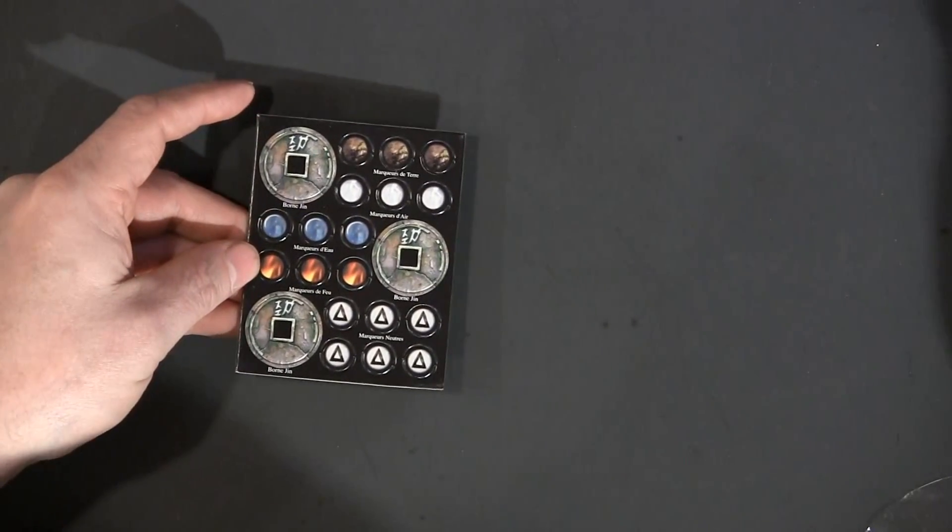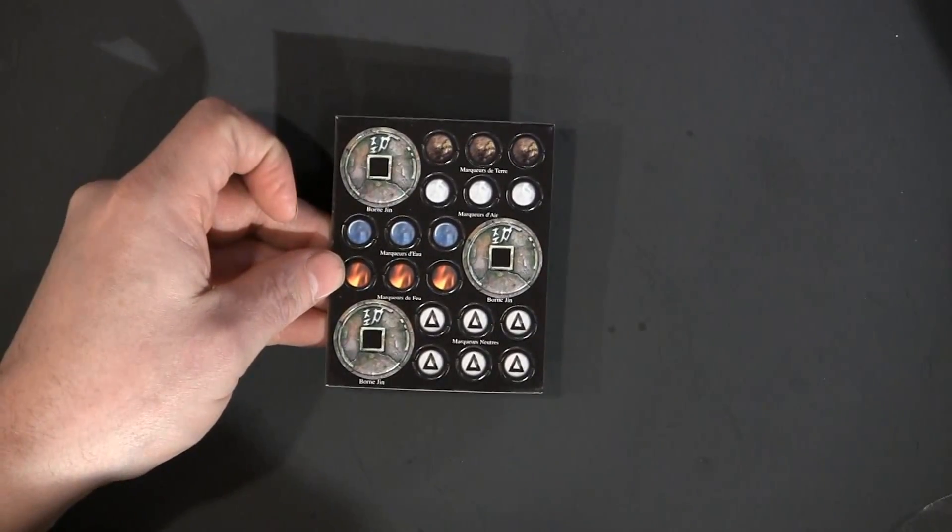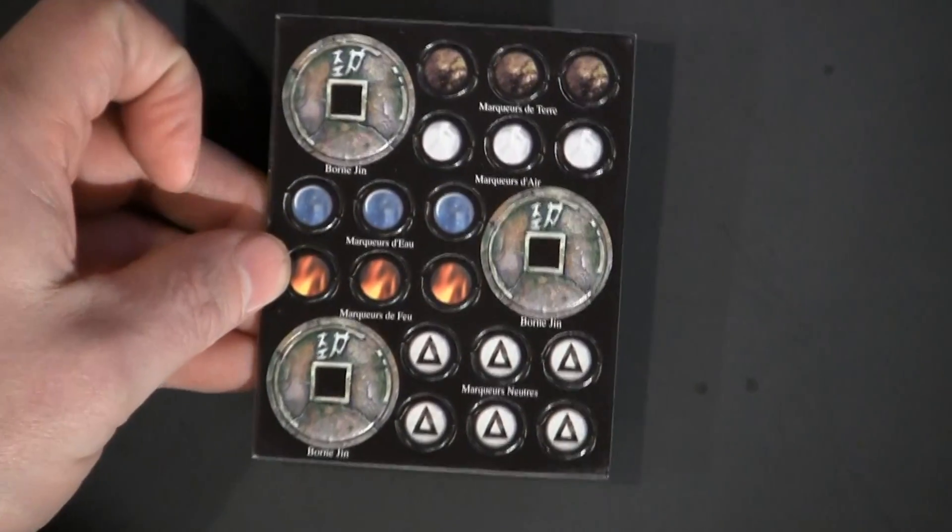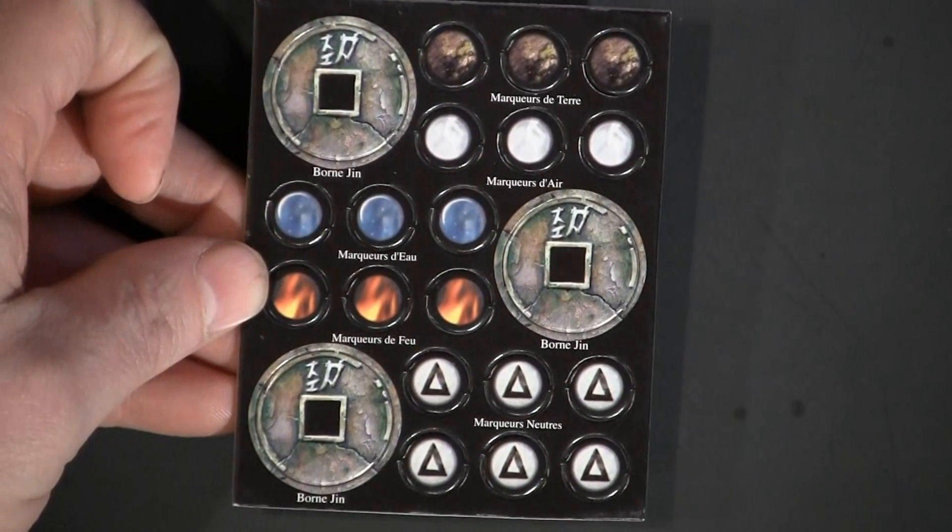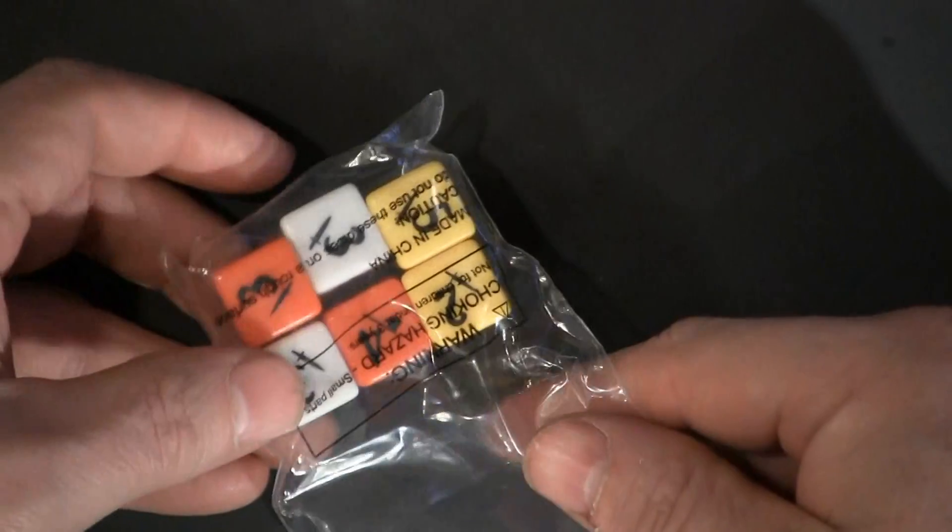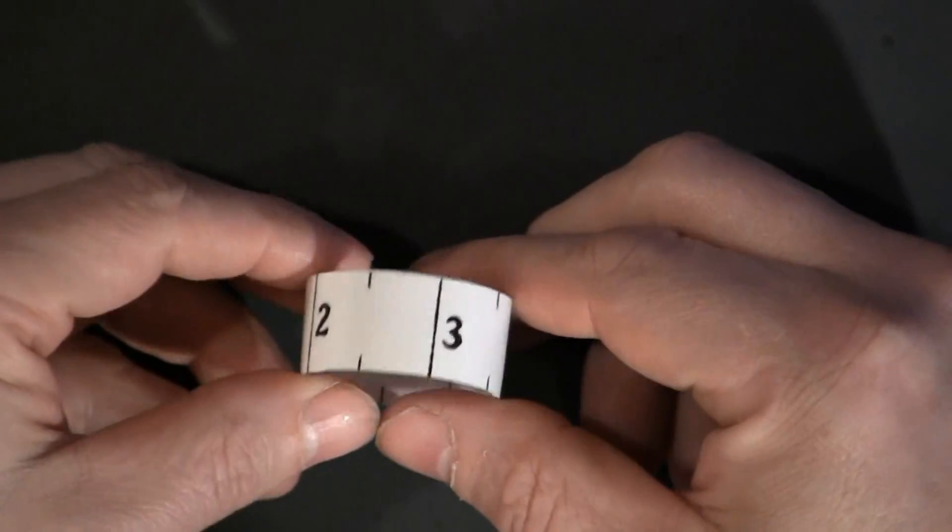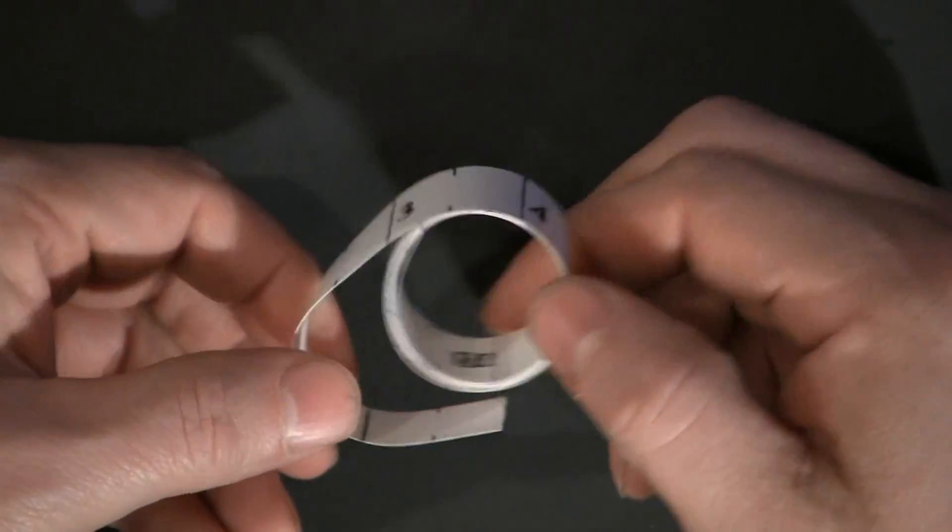Again, tokens for the game. Zoom in a little bit for you. Dice, bases, ruler. Looks like about 18 inches, 19 inches.